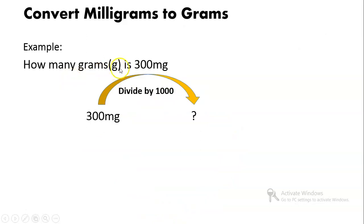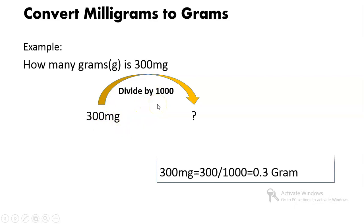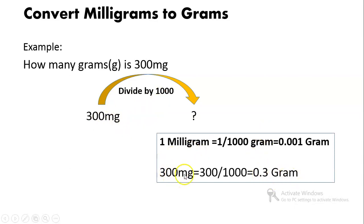Example: How many grams is 300 milligrams? The given value is 300 milligrams, and you have to convert it into grams. So 300 milligrams divided by 1000 gives 0.3 grams. Note that 1 milligram equals 1/1000 gram, which equals 0.001 gram. So 300 milligrams divided by 1000 equals 0.3 grams.